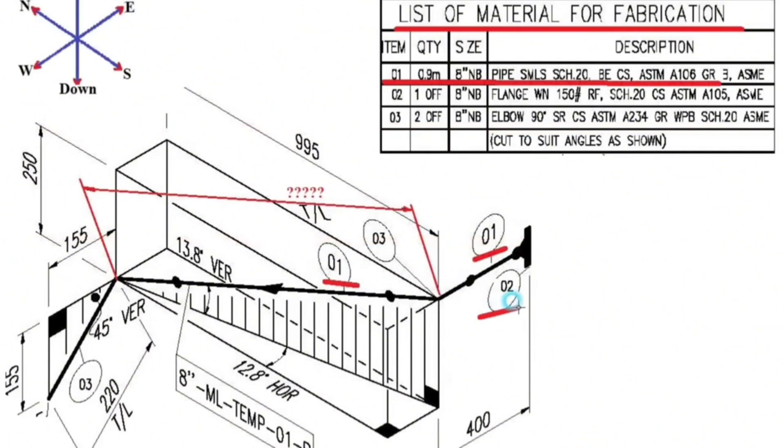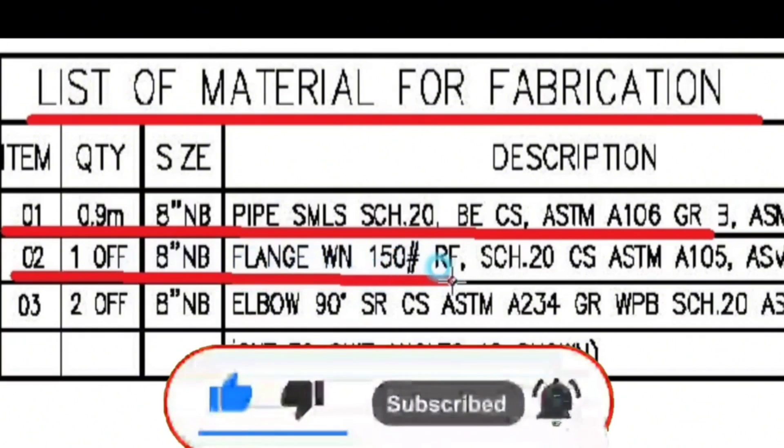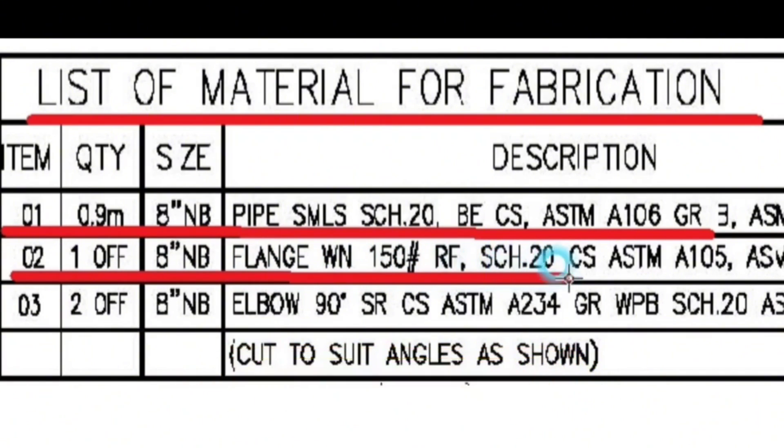Let's look at detail number 2. Item number 2, the quantity is 1 piece, 8 inches flange, weld neck 150 classes, raised face, schedule 20, carbon steel.